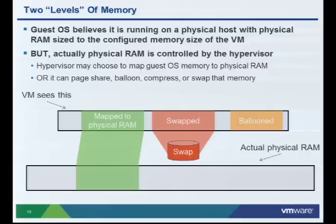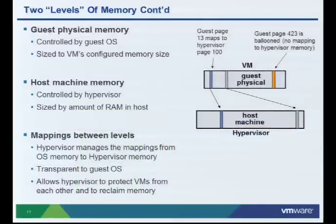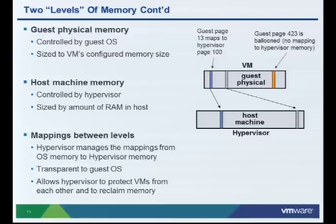For things like performance and security — so that VMs can't read other VMs' memory — the hypervisor has to control that bottom level. It controls how much memory is doled out, which parts of the VM memory are actually mapped down into physical RAM, and which parts are swapped or ballooned. The hypervisor controls all that. The guest OS has an allocator on the top level and controls that; its size is the amount of configured memory you've given the VM. The hypervisor controls the host machine memory — the physical RAM — and controls the mappings between the two levels.